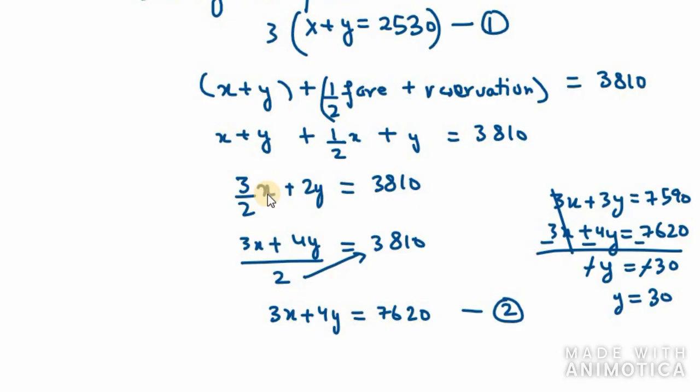X is still unknown to us, so I will use the first equation, x plus y equals 2530. Y is 30, so x will be 2530 minus 30, which is 2500. That means the full fare will be 2500 and the reservation charges will be 30. So that's your answer for question number 10.